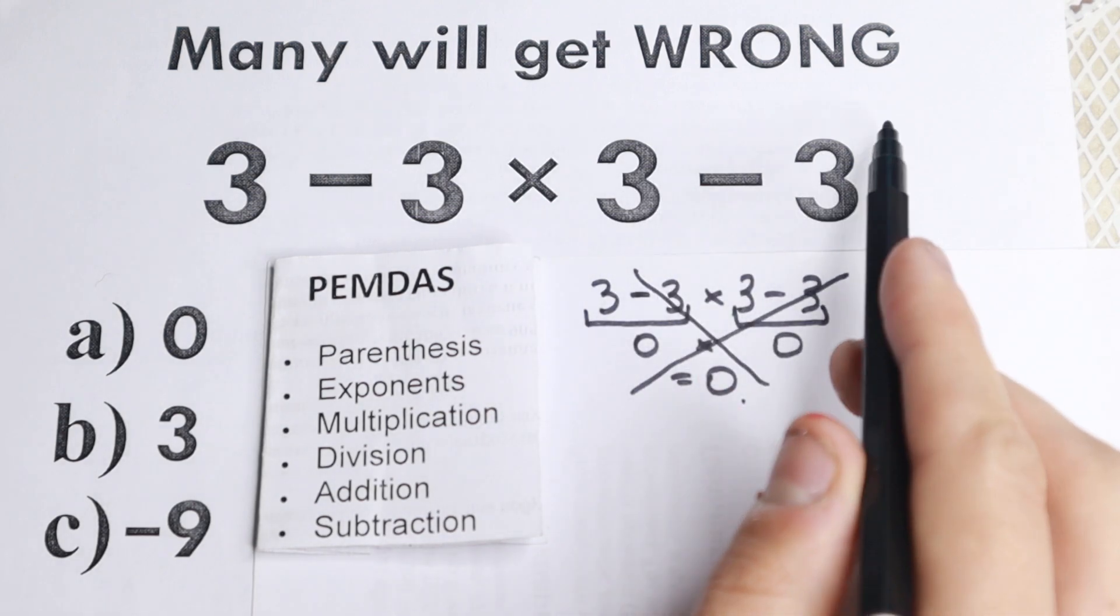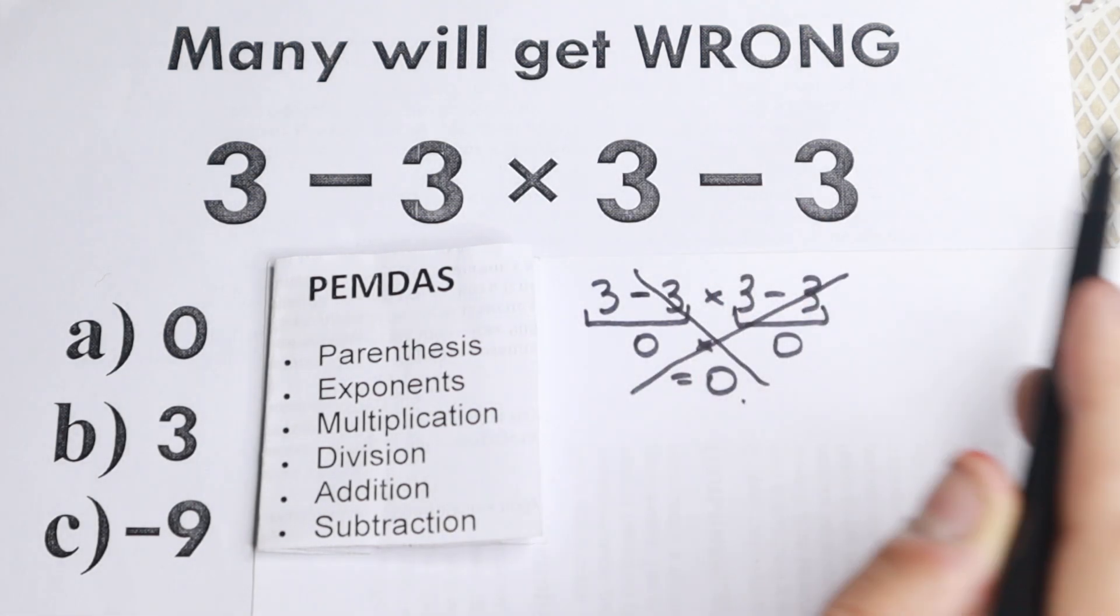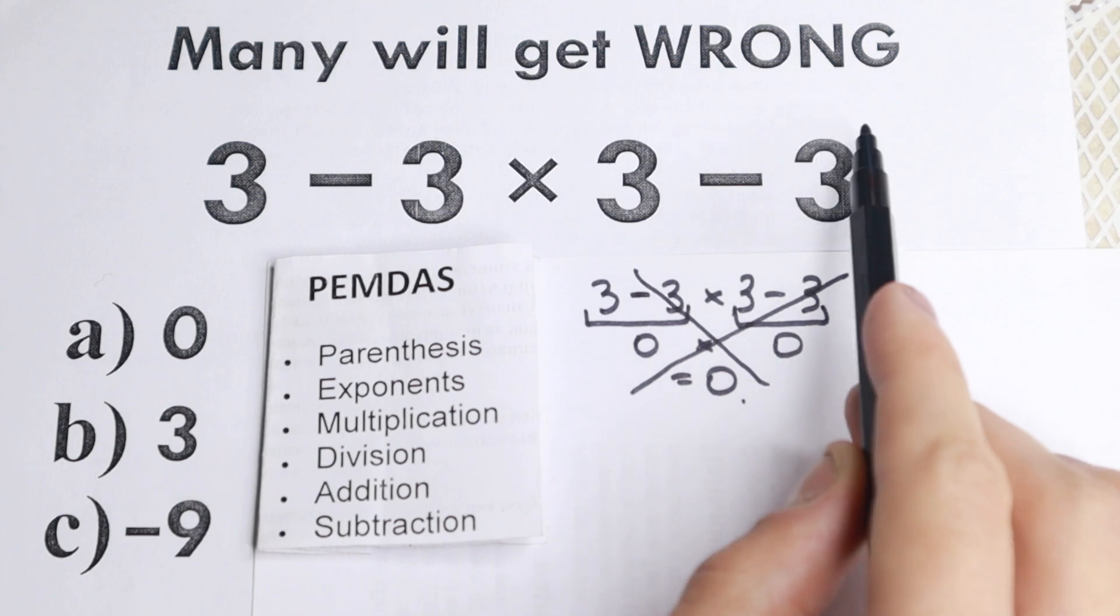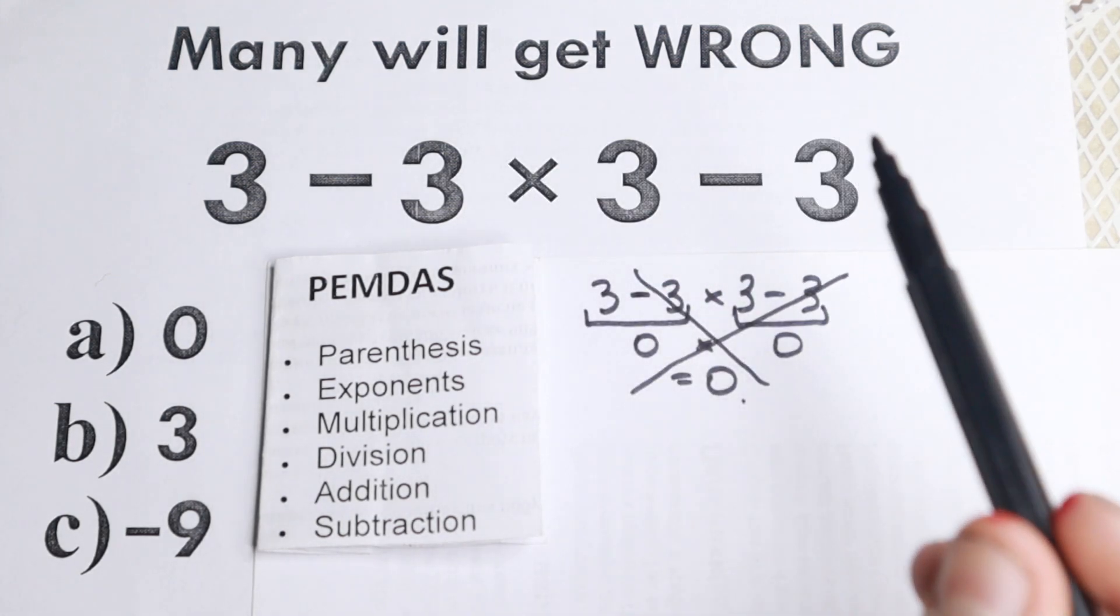Then we have exponent. Do we have any cubes, squares, 4th power, 5th power? I don't see any of those. We don't have any exponents right here. So we skip this part as well.